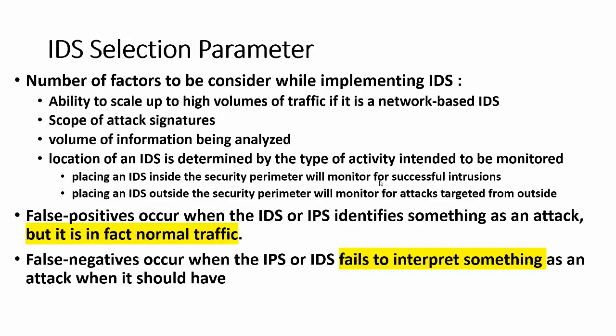When dealing with IDS, there are two types of errors. False positive is when IDS identifies something as an attack but it's actually normal traffic — for example, flagging an administrator accessing from home as an intrusion. False negative is when an actual attack occurs but IDS fails to detect it. For any security consultant or organization, the primary concern is false negatives, where installed solutions fail to detect real intrusions.